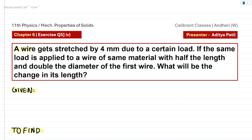The question says we have a wire which gets stretched by 4 millimeters due to a certain load. Now if the same load is applied to a different wire of the same material but with half the length and double the diameter of the first wire, then what will be the change in its length? So basically the change in length of the second wire is what we have to find.